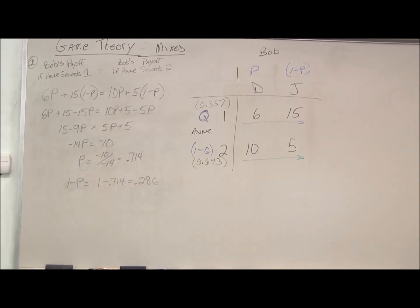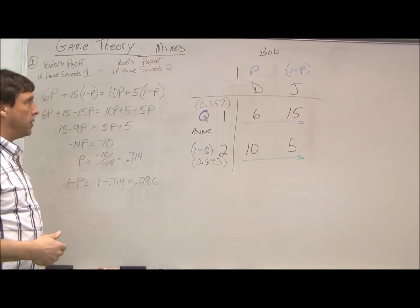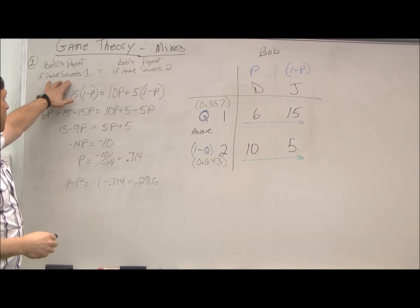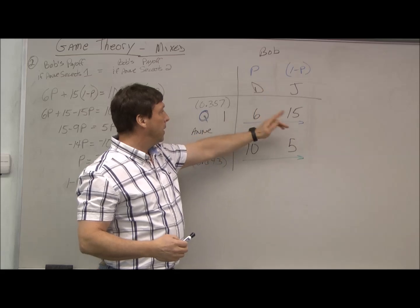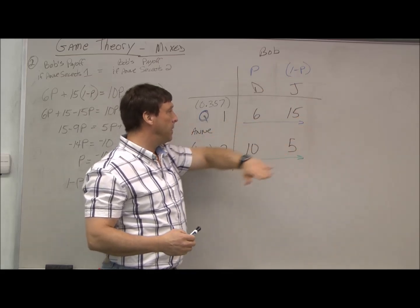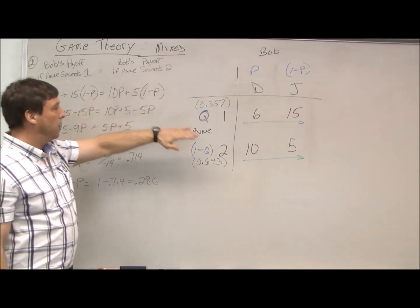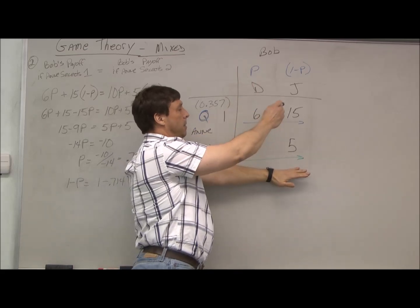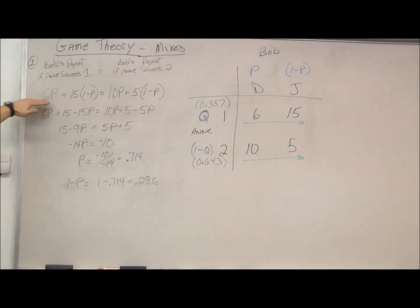Our second step is we figure out Bob's probabilities for his two strategies. First, we take Bob's payoff if Annie selects strategy one. That's p times 6 plus one minus p times 15, which equals Annie's payoff if she selects two, which is p times 10 plus one minus p times 5. So that's what I have represented here.